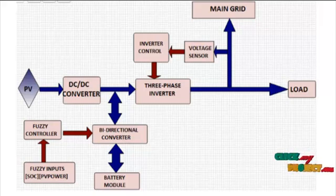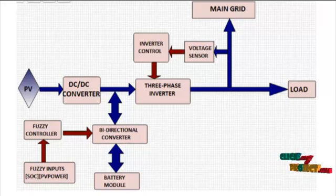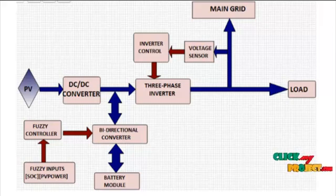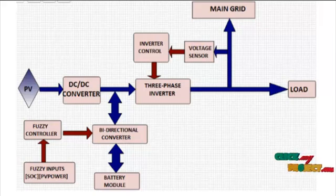The DC supply is converted into AC and fed into the main grid, which is connected to the load. A voltage sensor on the main grid measures voltage and feeds that into the inverter control. The fuzzy controller inputs include SOC and PV power, among others. The output of the fuzzy controller is fed into the bidirectional controller. Overall, this controller controls the power alternating switches.